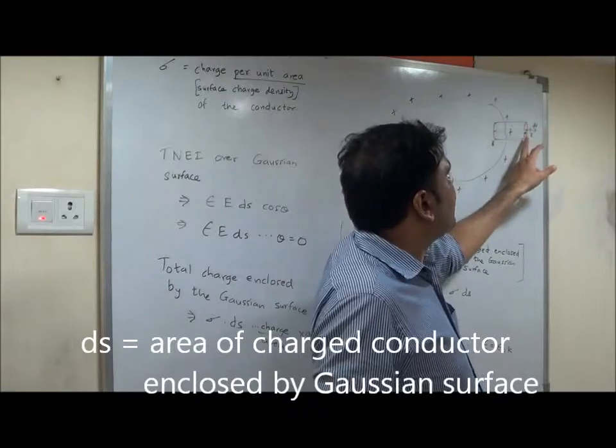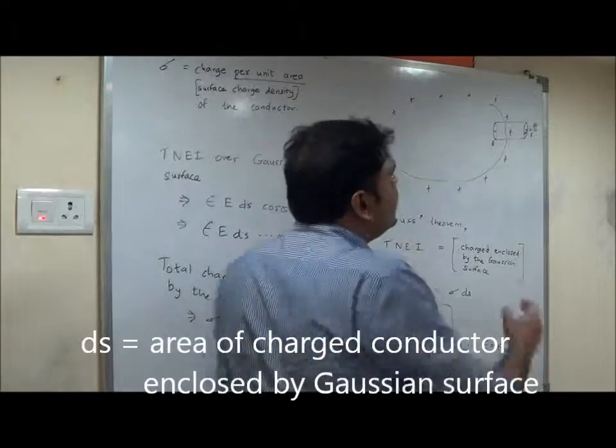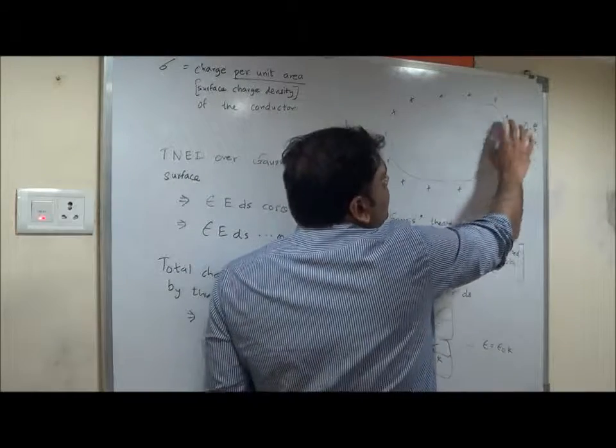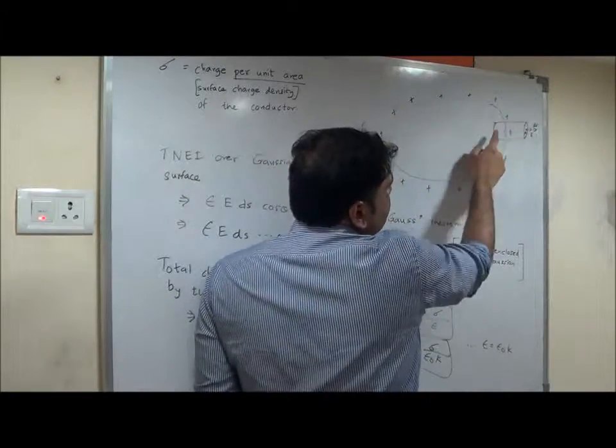Its area is DS, actually DS is the area which is enclosed by this Gaussian cylinder inside. Can you see that?